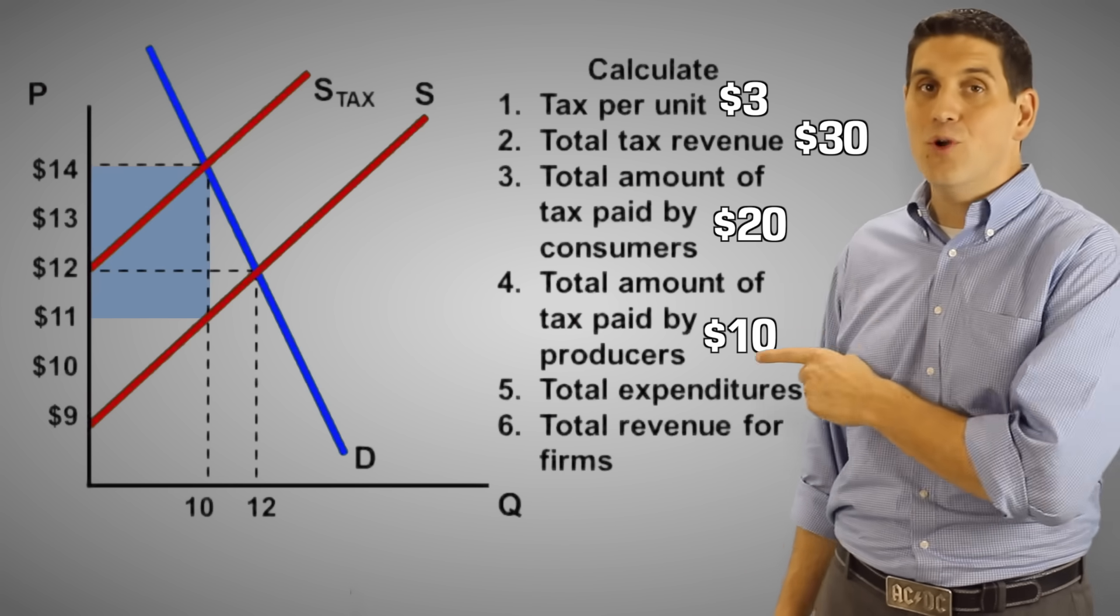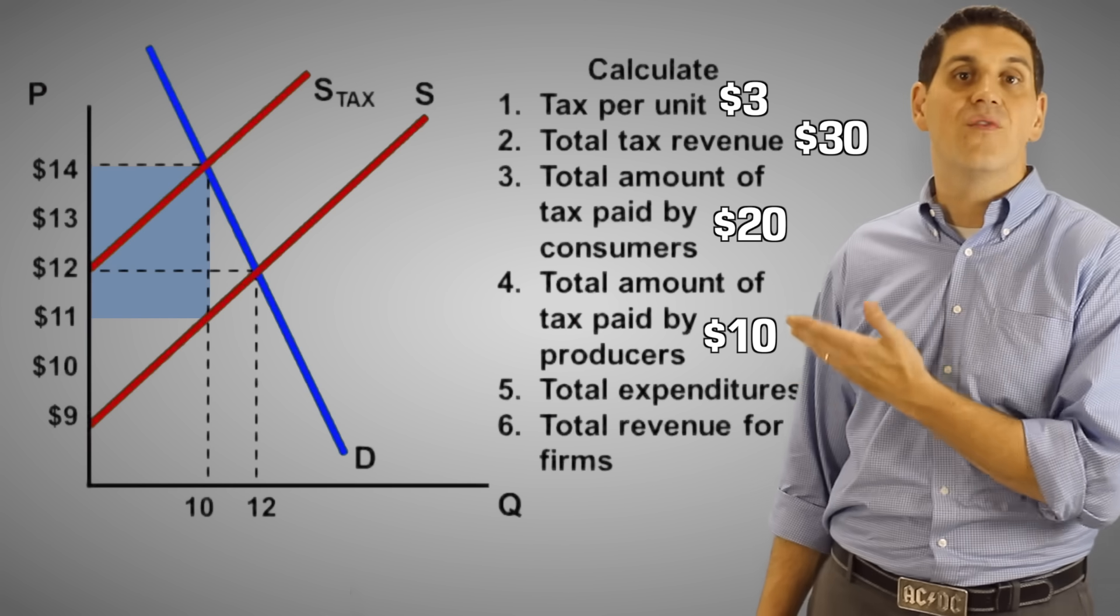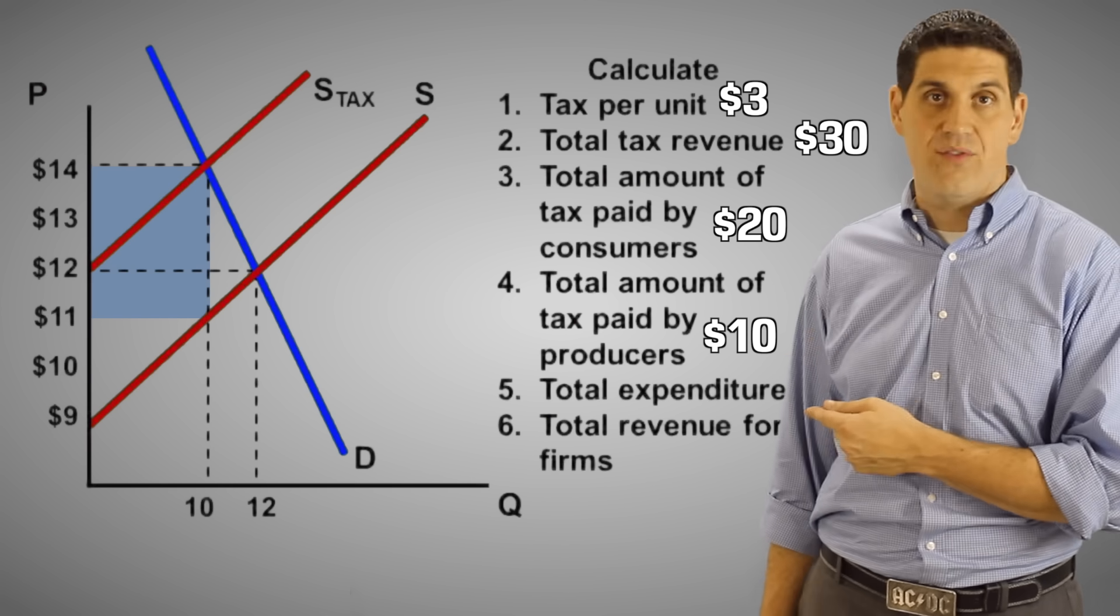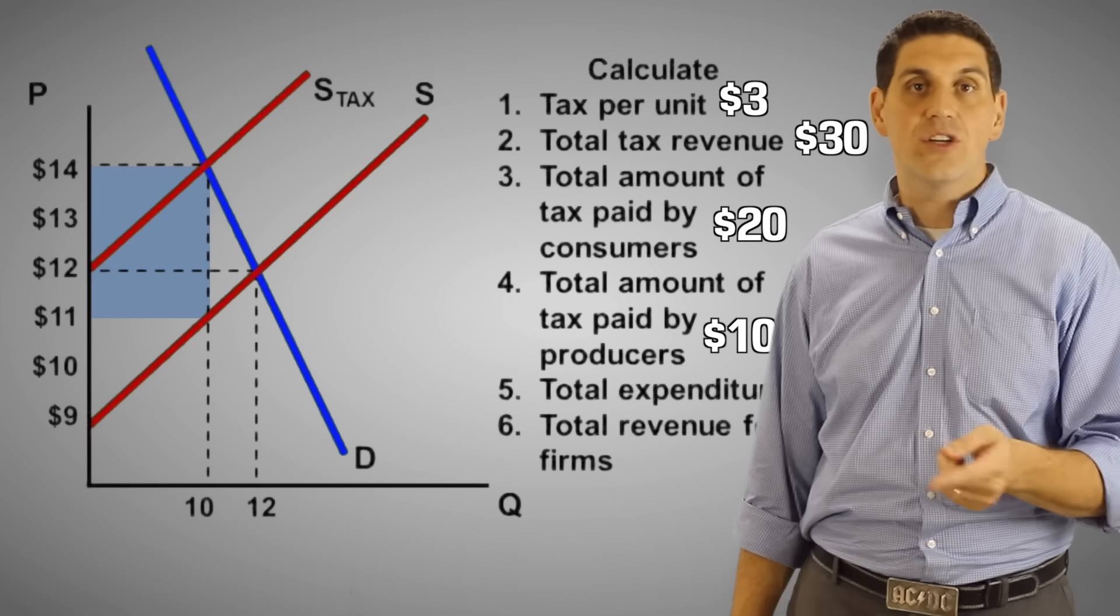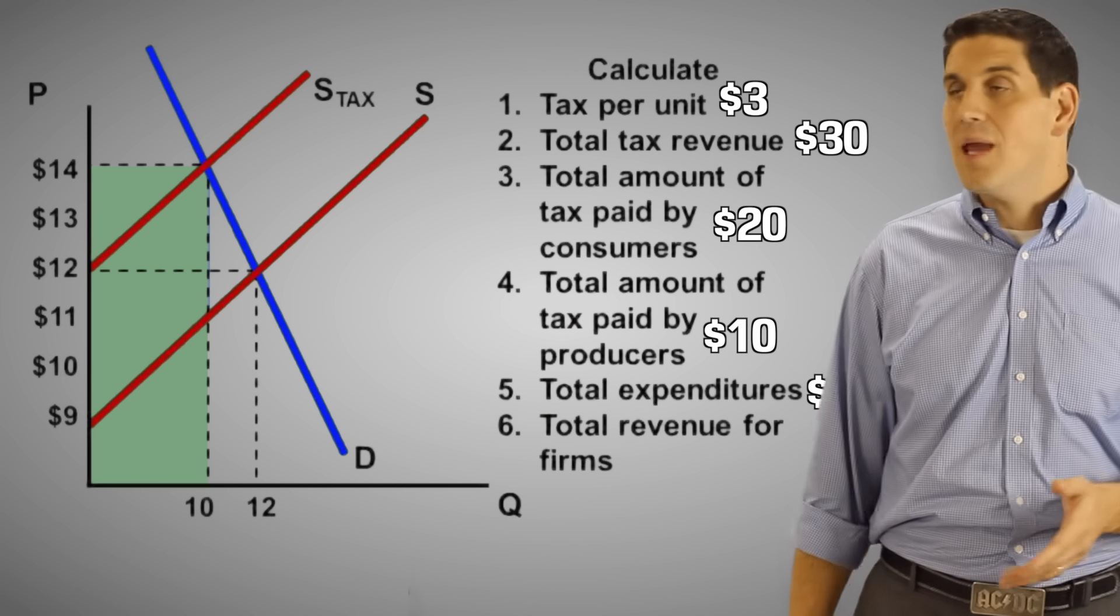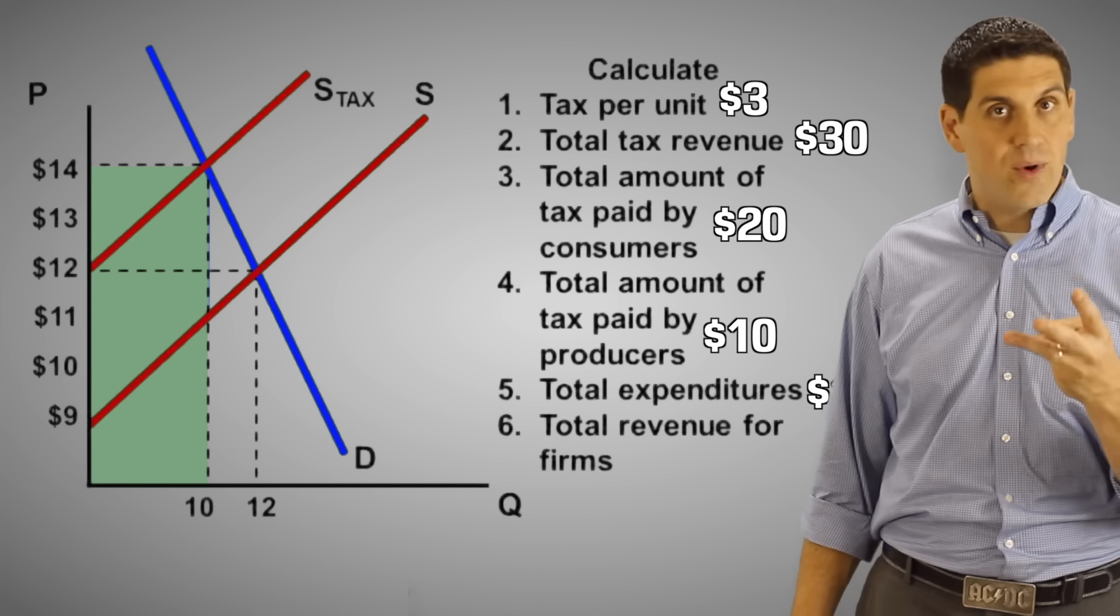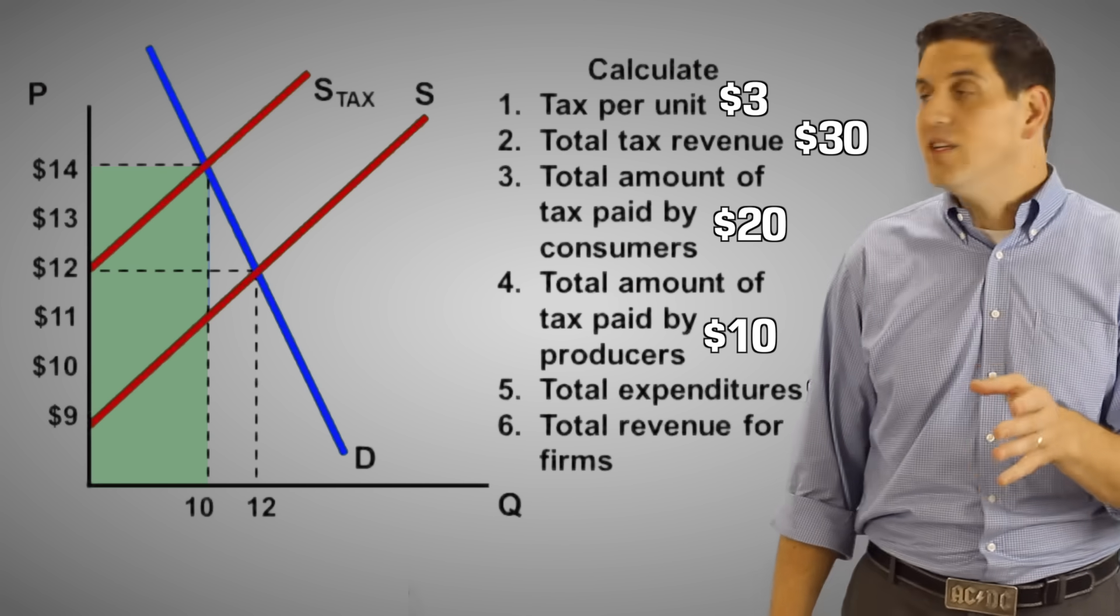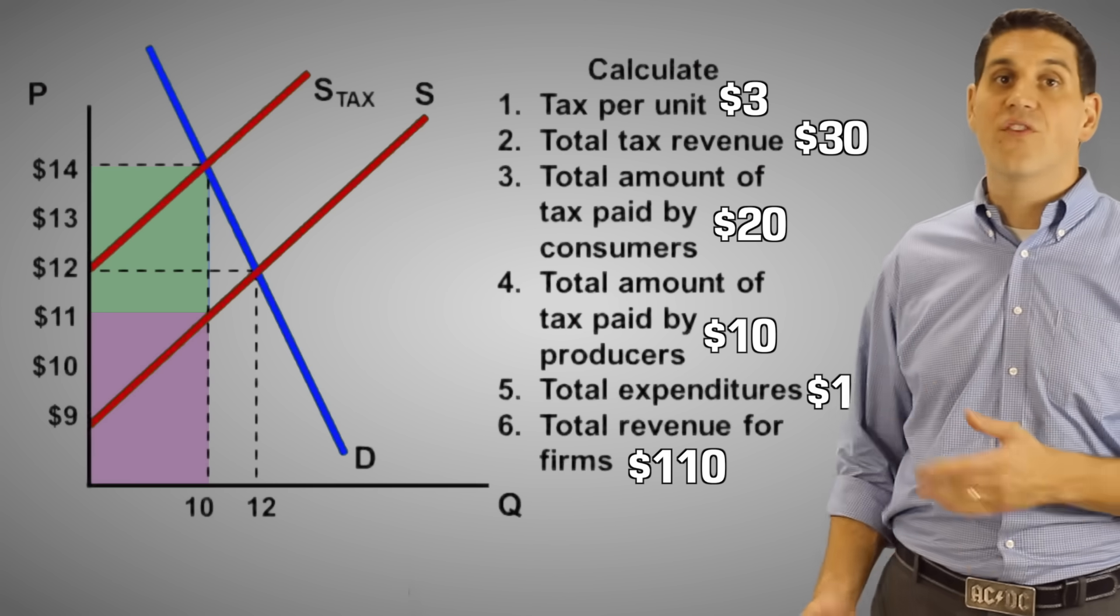Notice that the consumers and the producers do not share this tax equally. It's because the demand curve is relatively inelastic compared to the supply curve. Total expenditures or spending after the tax is the $14 times 10 or $140. The total revenue to firms is how much firms get to keep. Well, they don't get to keep $14 per unit. They only get to keep $11 because the $3 per unit goes to the government. So $11 times 10 gives you $110 revenue that goes to firms.